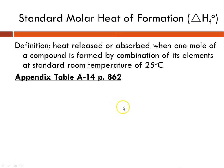In the textbook, there's an appendix table A-14 on page 862 where you can look these up. For instance, if you were looking up the formation of liquid water from gaseous hydrogen and oxygen, you would find in the table that value is negative 285.8 kilojoules, which would be kilojoules per mole of water produced.